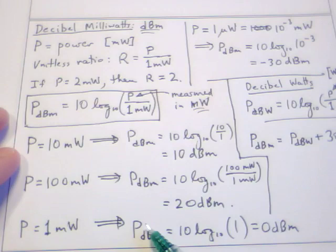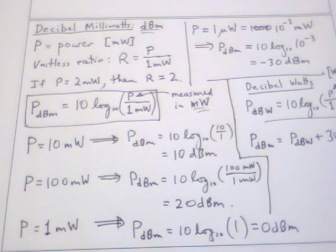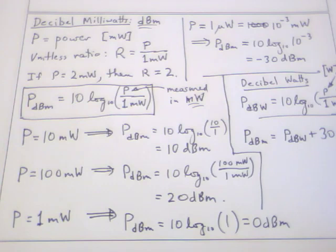You can see when I have powers less than a milliwatt, I go to negative dBm values, and when I have powers greater than a milliwatt, I have positive dBm values. Plugging in the reference value of one milliwatt gives me exactly zero dBm. These calculations are fairly straightforward using your calculator, as I demonstrated in the last video. Here I've also introduced the dBW unit, decibel watts.